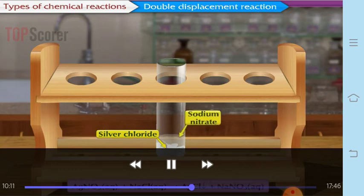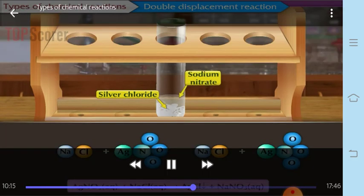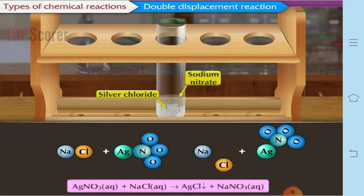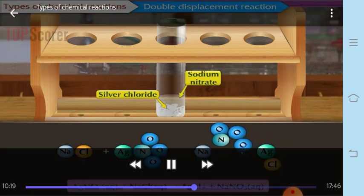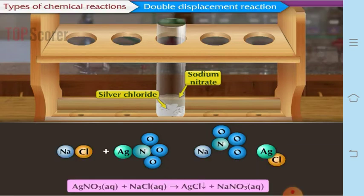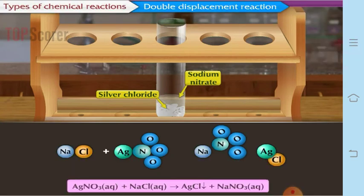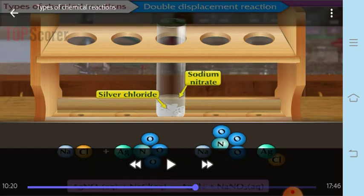As seen in the example on page 33, when sodium chloride reacts with silver nitrate, it forms a white precipitate of silver chloride and sodium nitrate solution is formed.